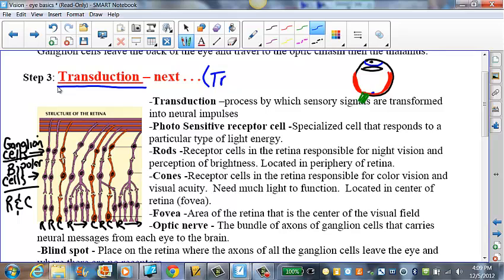Remember, transduction is basically a translation of light energy into a neural impulse so the brain can understand the information, kind of like if somebody was speaking to you in German, and you could hear what they're saying, but the information isn't useful to you unless it's translated into English or whatever your native language is. Transduction is the process of sensory signals getting transformed into neural impulses, and then the brain can translate and reconstruct.